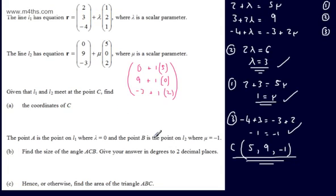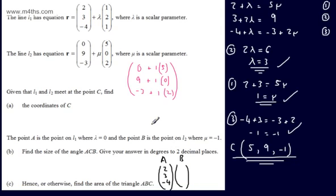First, let's find A and B. Point A is on L1 where λ = 0, so the position vector of A is simply (2, 3, -4). Point B is on L2 where μ = -1, giving position vector (-5, 9, -5). And C has position vector (5, 9, -1).